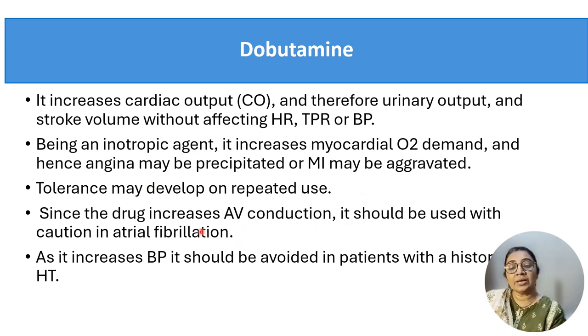Being an inotropic agent, dobutamine increases myocardial oxygen demand and angina may be precipitated or aggravated. Tolerance may develop after repeated use. Since the drug increases atrio-ventricular conduction, it should be used with caution in atrial fibrillation. It increases blood pressure, so it should be avoided in patients having a history of hypertension.